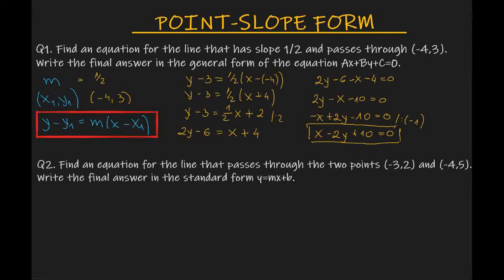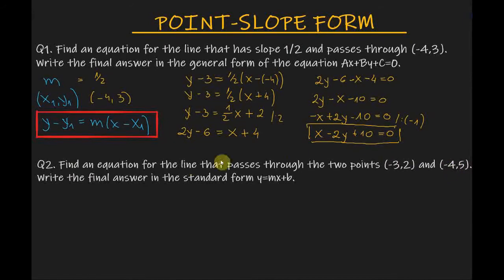Now let's work on our second problem. Find an equation for the line that passes through the two points (minus 3, 2) and (minus 4, 5). Write the final answer in the standard form y equals mx plus b.